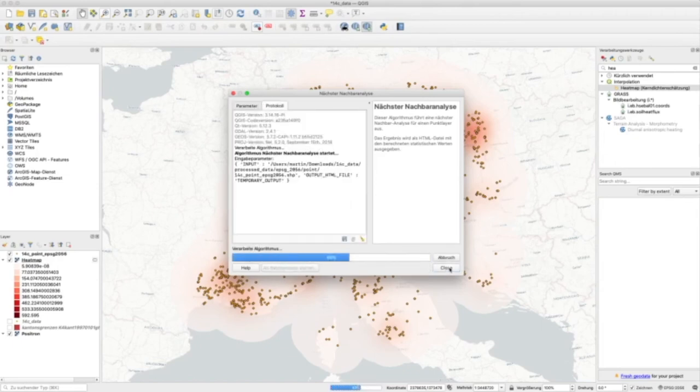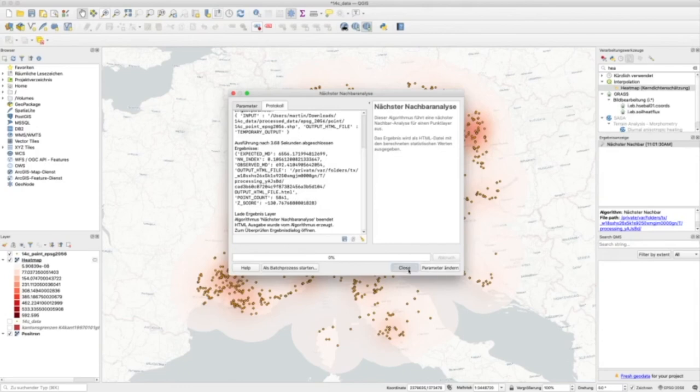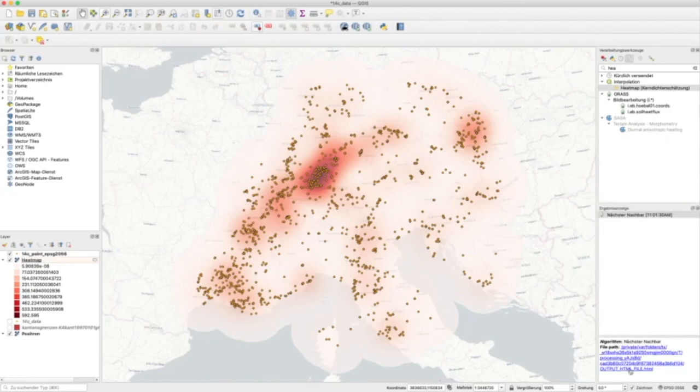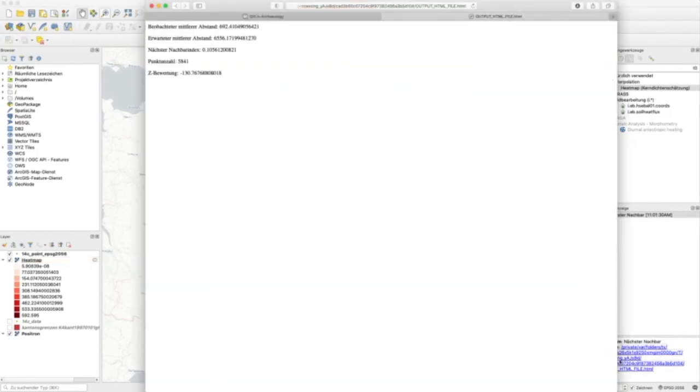Let it process and now here is your result. You probably don't see that in the first place because usually these algorithms would change something in the map or give you another layer. That's not the case here because the result is actually hidden. There is the result pane and here you can see the result from nearest neighbor analysis. Here you can see a link that actually links to an HTML file. I will move this here. If I click that, here is your result. As I said, it's not very convenient. It would be nicer if the result would be shown really in the output dialog.